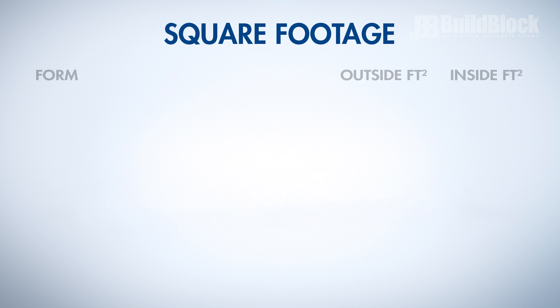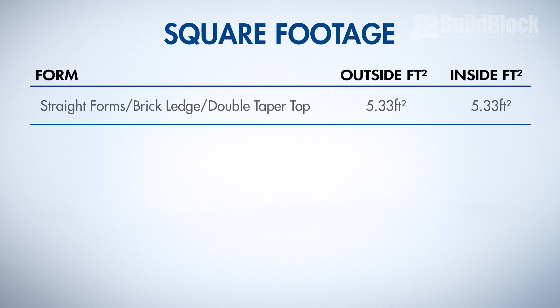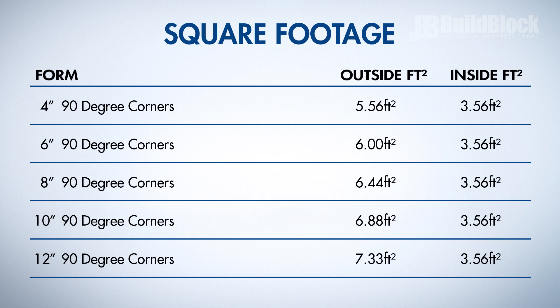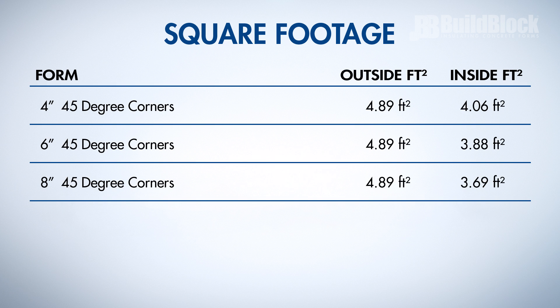Use the following tables to determine the total square footage of all forms. For all straight, brick ledge, and double taper top forms, the outside and inside square footage will be the same. Use the corresponding table to determine the square footage of all 90 degree corner forms.